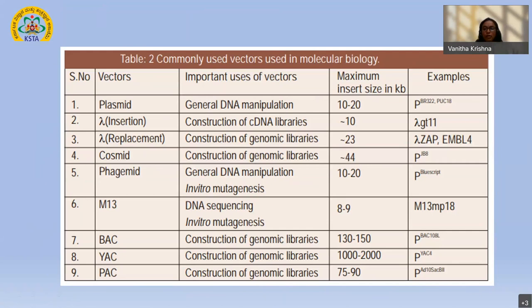There are several categories of vectors. The most common and simplified, easy to handle, is plasmid vectors — used for all kinds of general DNA manipulations. The maximum insert size for a plasmid is around 10 to 20 kb, with examples like pBR322 or pUC18.